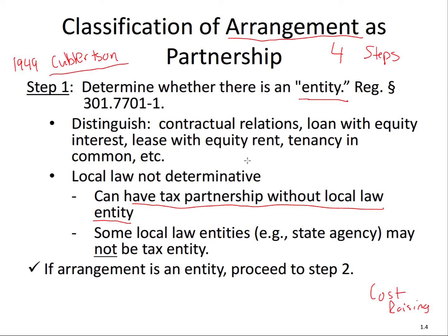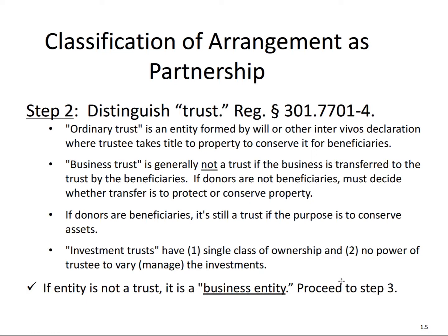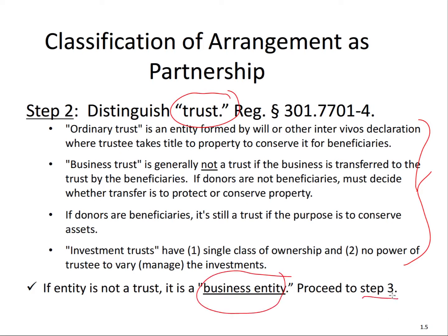Let's continue with step two. If we do have an entity, in step two we distinguish whether the entity is a trust — specifically, distinguishing a trust from a business entity. That's the key. So we had an entity under step one, now we're distinguishing a trust from a business entity. Let's say we have a business entity and continue to step three.